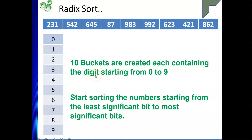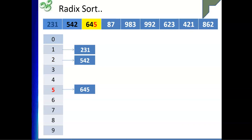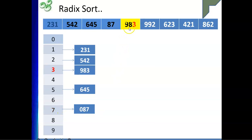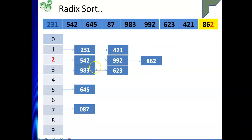For the least significant digit: 231 goes into bucket 1. 542 goes into bucket 2. 645 goes into bucket 5. 087 goes into bucket 7. 983 goes into bucket 3. 992 goes into bucket 2 after 542. 623 goes into bucket 3 after 983. 421 goes into bucket 1 after 231. 862 goes into bucket 2 after 992.